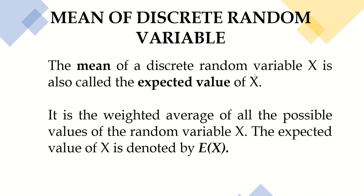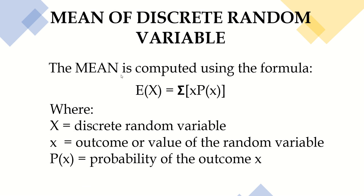What is the mean of a discrete random variable? The mean of a discrete random variable X is also called the expected value of X. It is the weighted average of all the possible values of the random variable X. The expected value of X is denoted by E(x), and is computed using the formula E(x) = Σx·P(x), where capital X is the discrete random variable, small x is the outcome or value of the random variable, and P(x) is the probability of the outcome x.